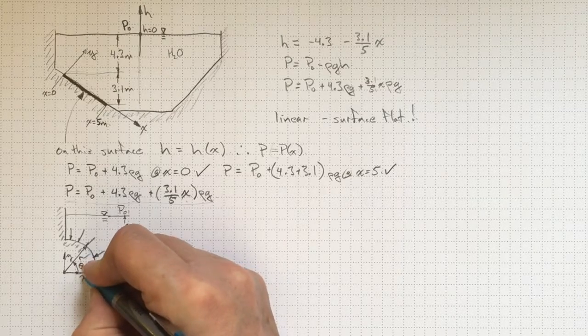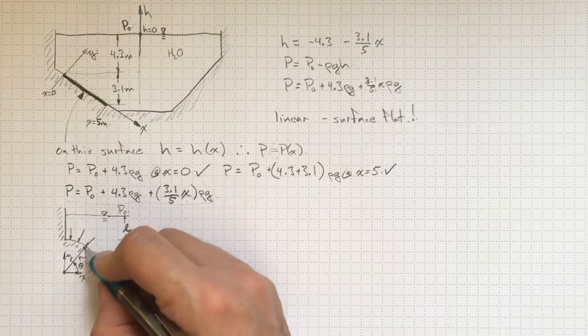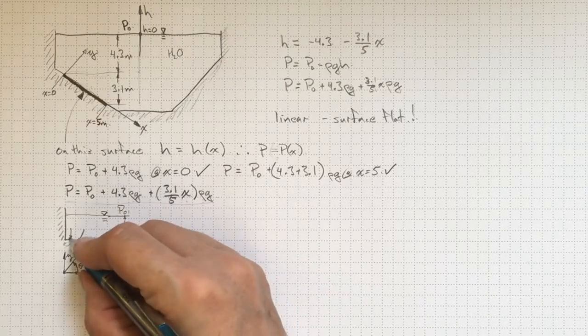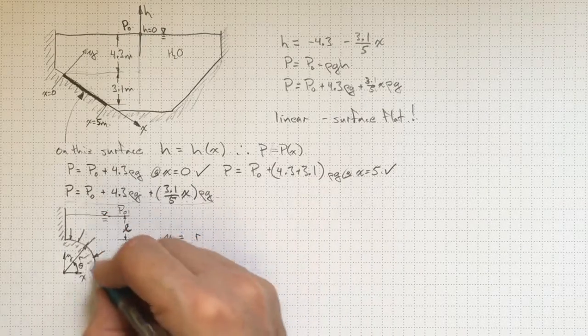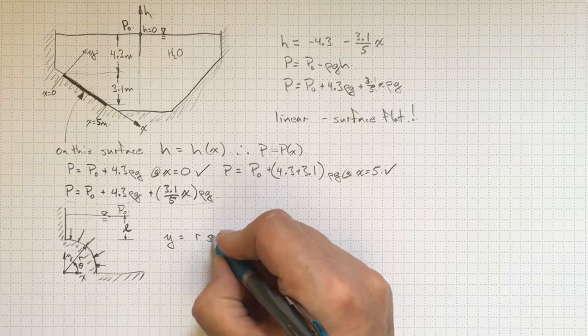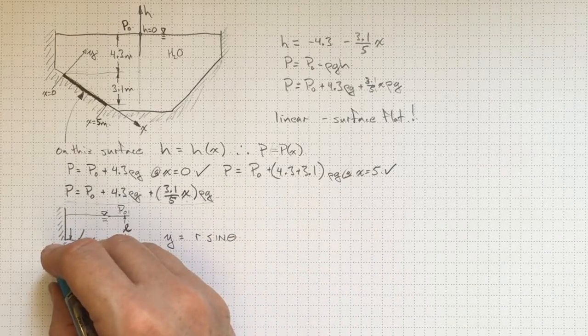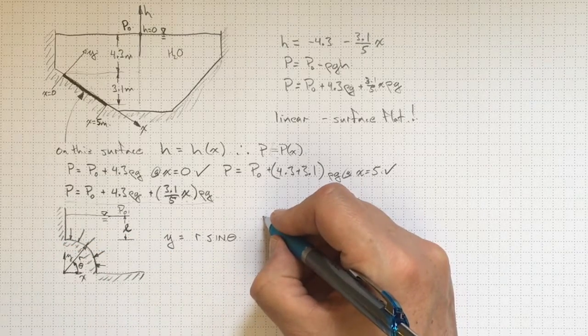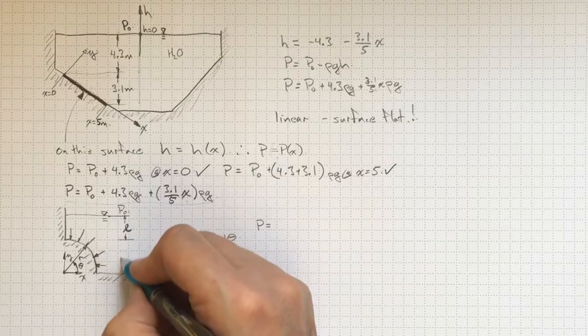If that's x and y, I could also think of things in terms of r and theta. And that might make my life a little easier. Now, if that's r and that's theta, then the y-coordinate here is equal to r, the radius of the circular section, times the sine of theta as we progress around that circle.